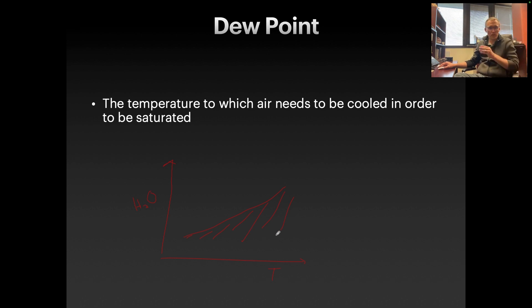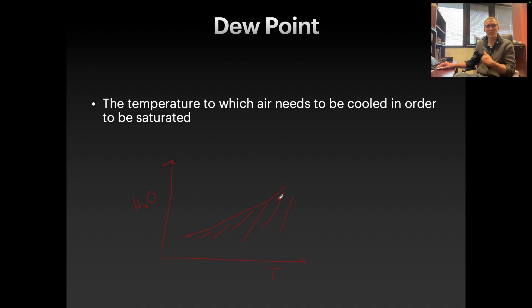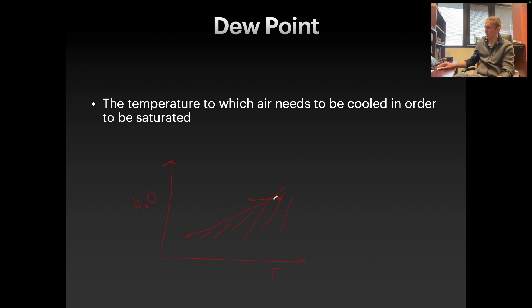You can imagine if we're at a high temperature, we've got a lot of water vapor in the air — maybe it's a hot, humid summer day. And then the air temperature cools, let's say at night when the sun goes down. The temperature goes this way, and that's going to put us into the above-the-line area, which means we can't be over there, so instead we'll go to the line.